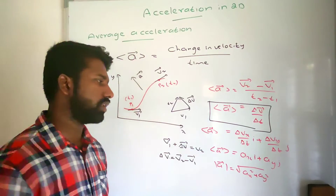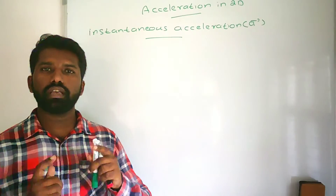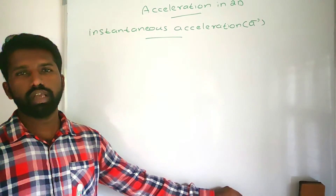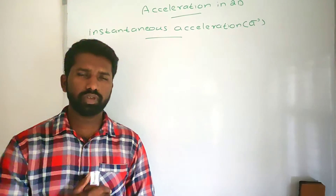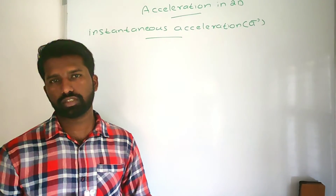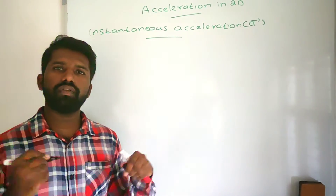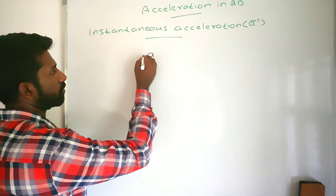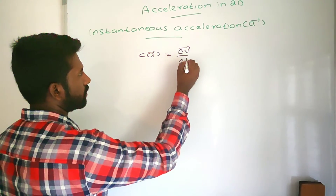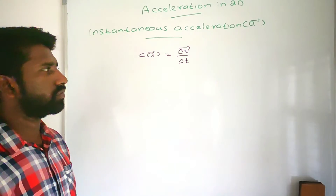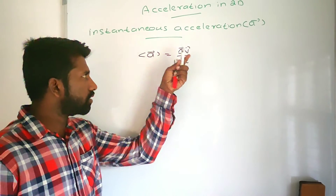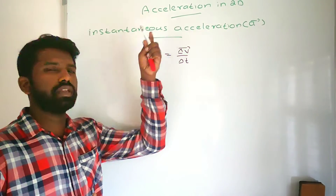Now we will see instantaneous acceleration — the acceleration at a particular instant. For example, if a car is moving at 10 a.m., what is its acceleration exactly at that moment? Looking at the average acceleration formula, delta V divided by delta t, when delta t becomes very, very small, the average acceleration becomes the instantaneous acceleration.